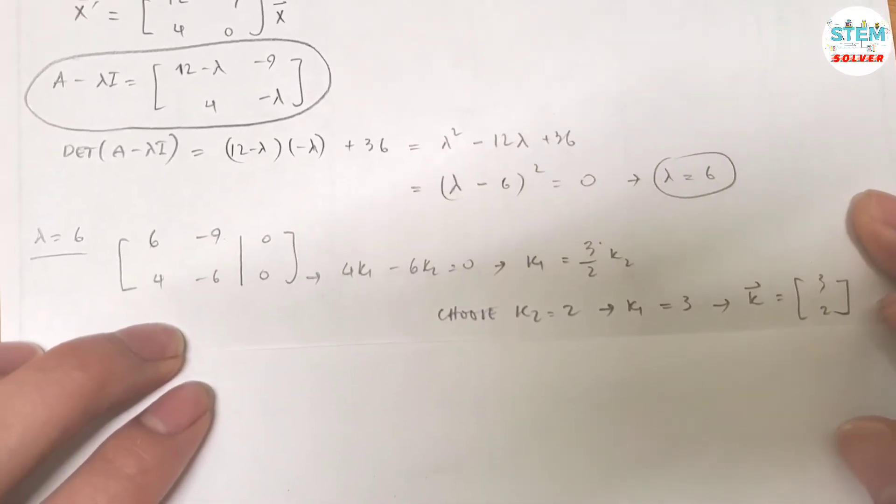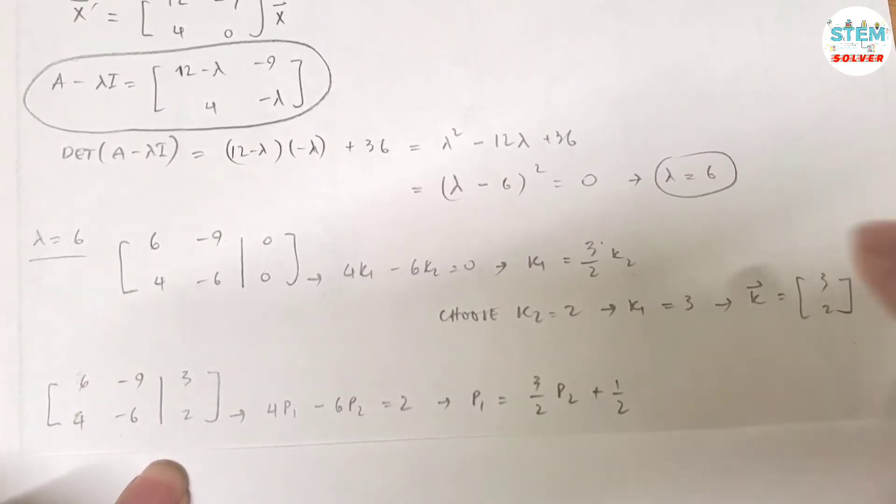Now what are you going to do next? Well, because you have repeated eigenvalue, you cannot use it twice because that's gonna give you the same thing.